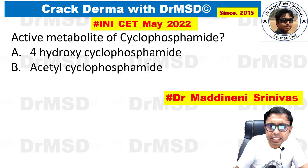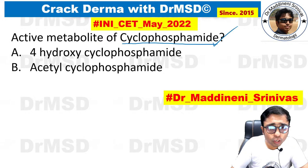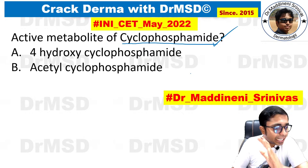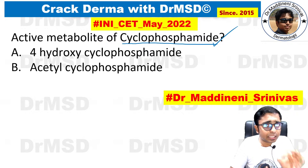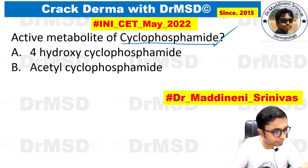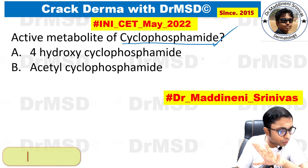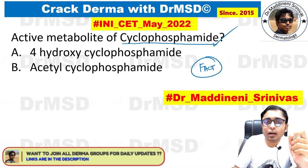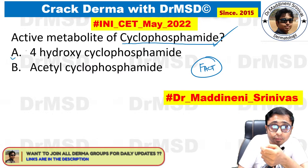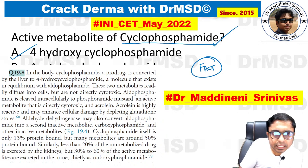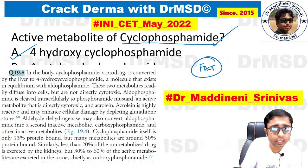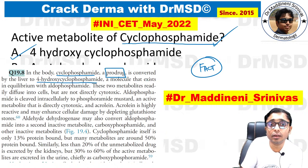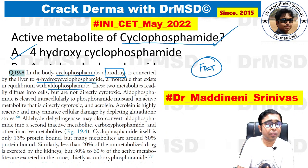One-liner question: the active metabolite of cyclophosphamide. This is a dermatopharmacology MCQ. The answer is 4-hydroxycyclophosphamide. Cyclophosphamide is a prodrug converted by the liver to 4-hydroxycyclophosphamide, which exists in equilibrium with aldophosphamide. This is taken from Wolverton's textbook of dermatopharmacology.